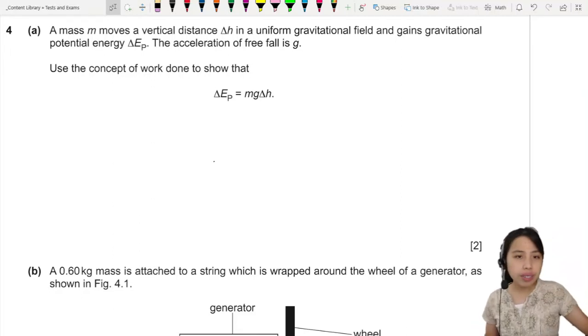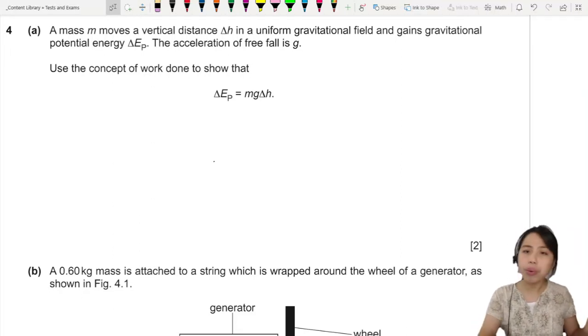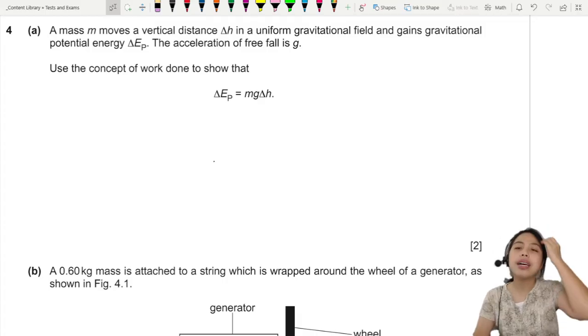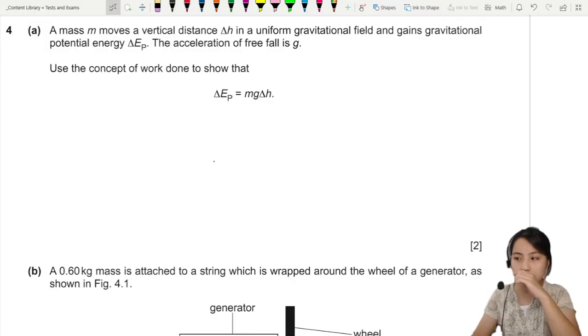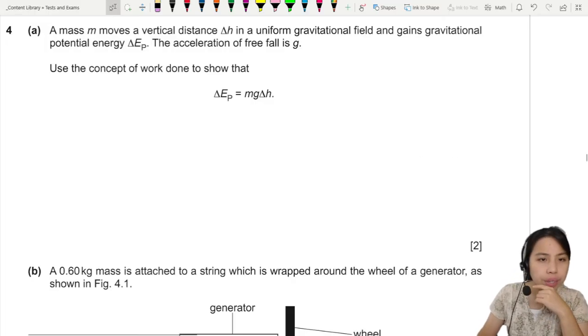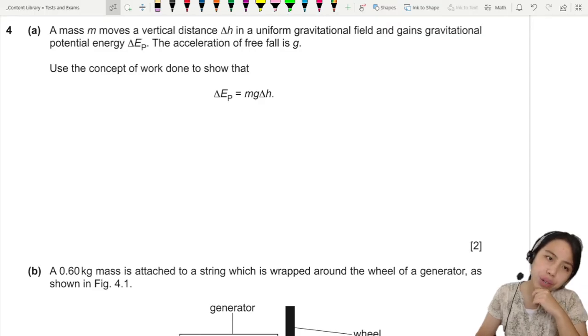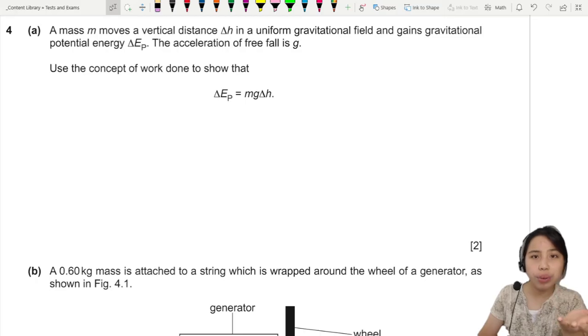A mass M moves a vertical distance delta H in a uniform gravitational field and gains gravitational potential energy. The acceleration of free fall is g. Use the concept of work done to show that you have this equation MGH.